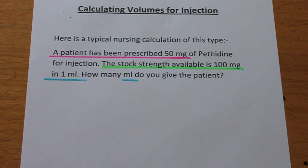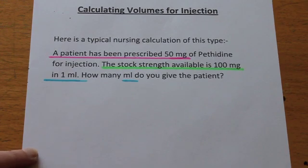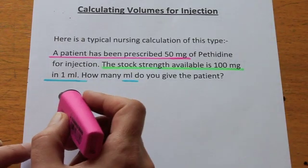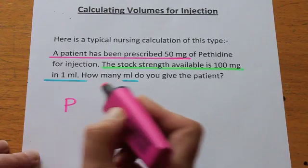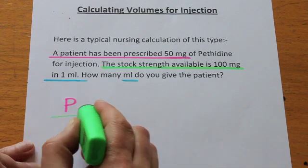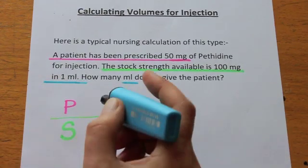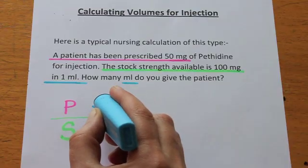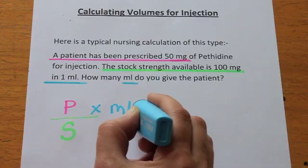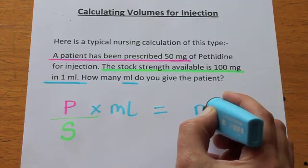You can see that I have colour coded the important bits of information in this question so that you can see where they will go in the formula to solve this. The information about the patient — what the patient requires — comes first: P for patient. Then we have the information about the stock strength available, and then the information about the number of mls that the drug has been dissolved in. Our final answer, if we're going to give an injection, has got to be in mls.